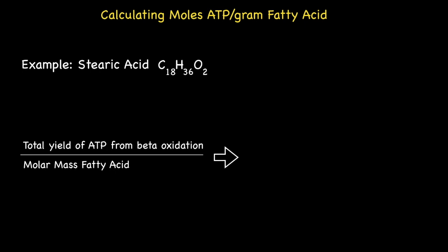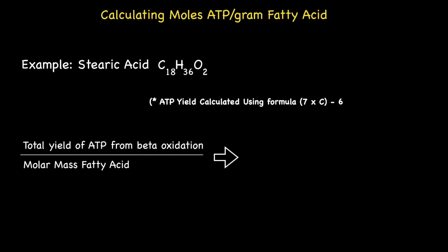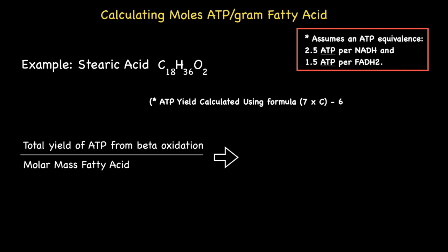You can calculate the ATP yield from beta oxidation by using the quick and simple formula 7 times C minus 6, where C is the number of carbons. This formula assumes an ATP equivalence of 2.5 ATPs per NADH and 1.5 ATPs per FADH2. Using this formula, which only works for saturated even-numbered fatty acids, gives 120 moles of ATP per mole of stearic acid.